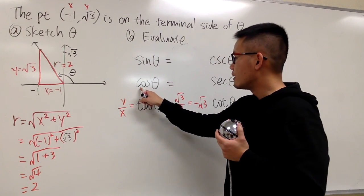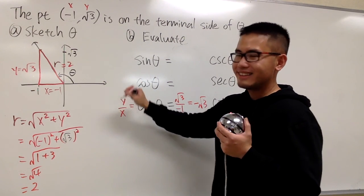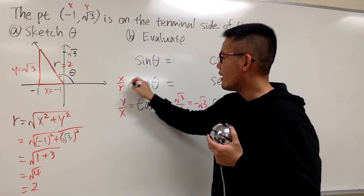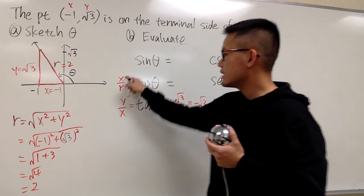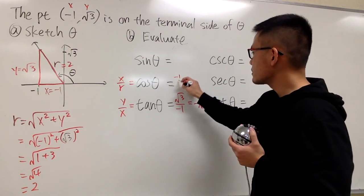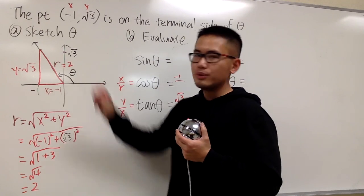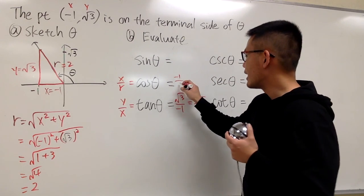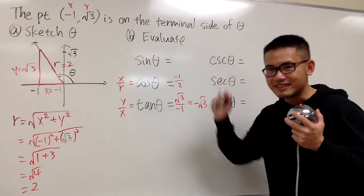Okay, for cosine theta, it is what? x over r. Okay, x is negative 1 over r is 2. So we just have 1 half, but it's negative, negative 1 half altogether then, like this.